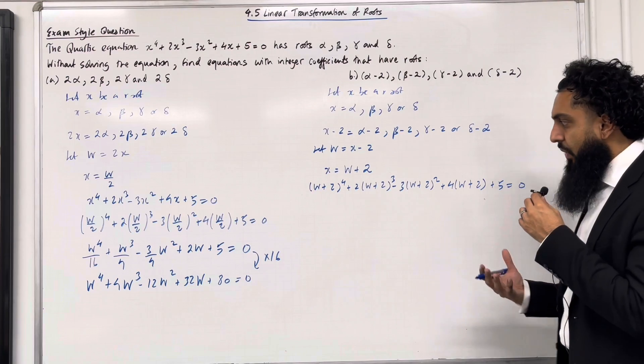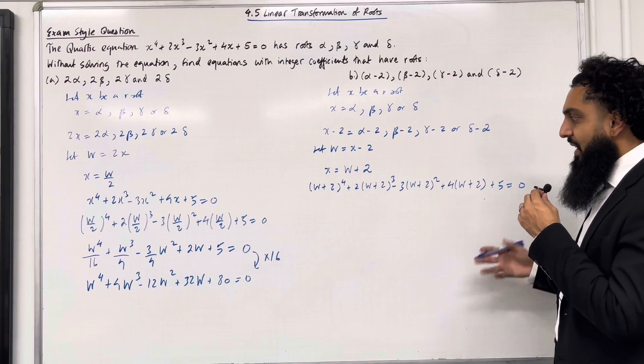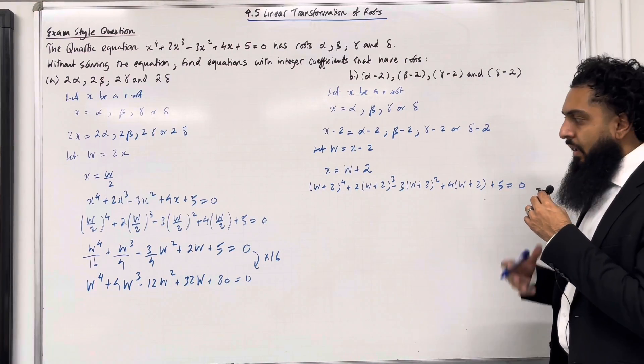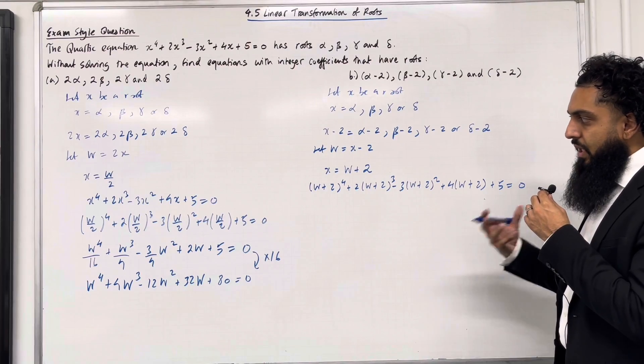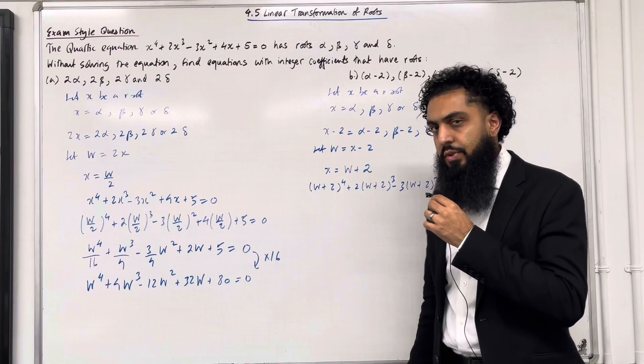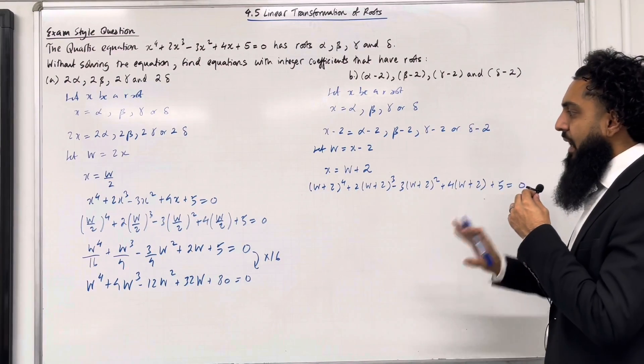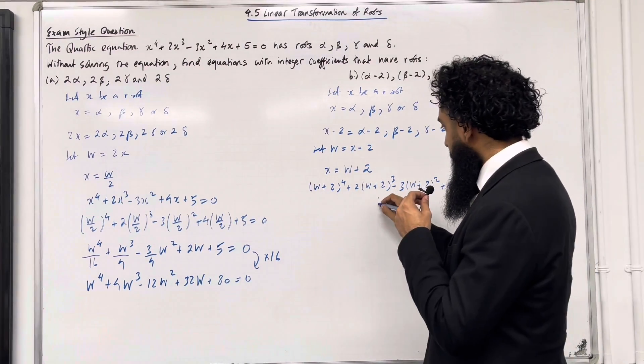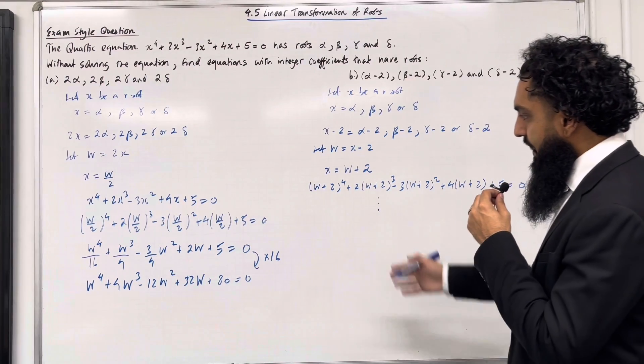So now I'm going to have to open up the brackets, expand it, simplify it until I get a polynomial in terms of W such that the coefficients are integers. So after simplifying and using some algebra, the final polynomial equation is as follows.